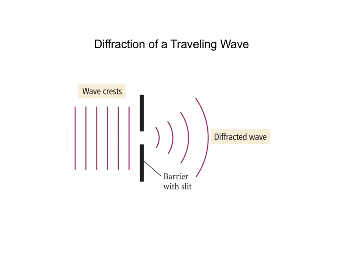We can also talk about what happens to a traveling wave. You've got maxima traveling along. If you take a piece of metal and poke a hole in it, the wave that comes through on the other side looks very different — you get a diffraction wave. The wave is still moving forward, but at the same time it's spreading out. That's referred to as the diffracted wave.